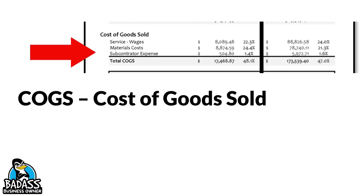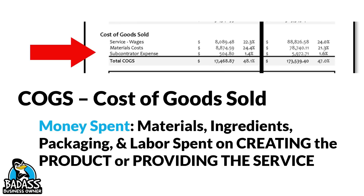For cost of goods, if it is part of providing the product at all — either making it or providing it if you're a service-based business — it's going to be under cost of goods. If you have products and you make those products, then you're going to have a higher cost of goods because you're going to have to include the labor because you cannot make it without that person. If you just turn around and you resell it, then it's just the original cost to you to purchase that material.